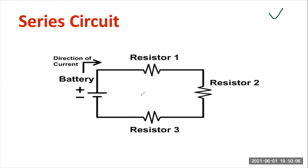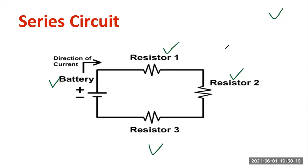Let us consider one electric circuit. We have a battery source and R1, R2, R3 — these are three resistors. We can say that R1, R2, R3, Resistor 1, 2, and 3 are all connected in cascaded or series fashion.